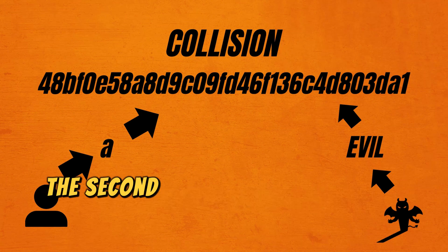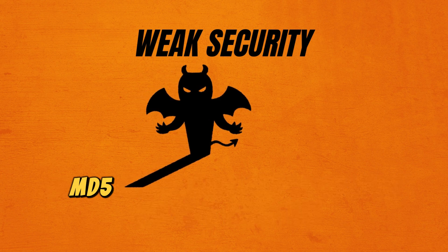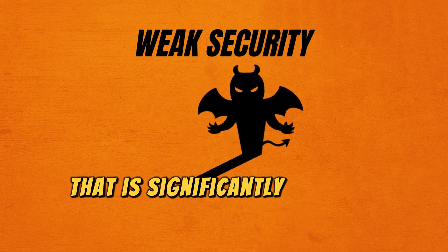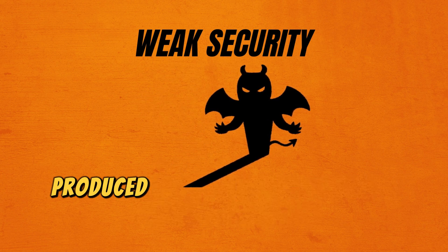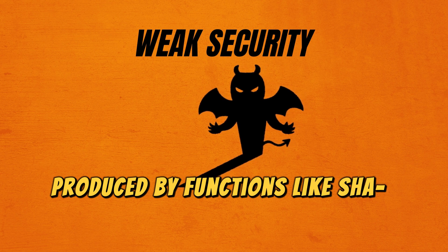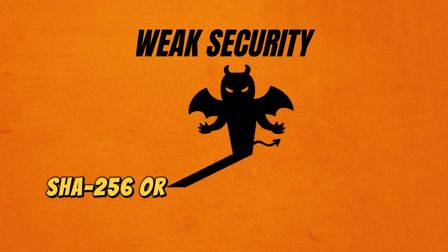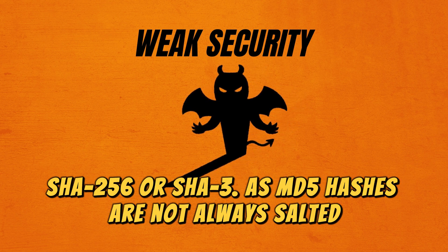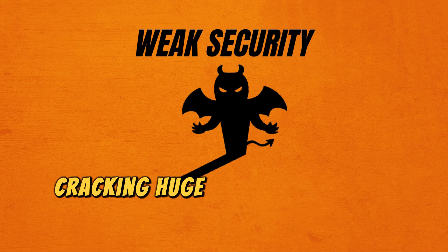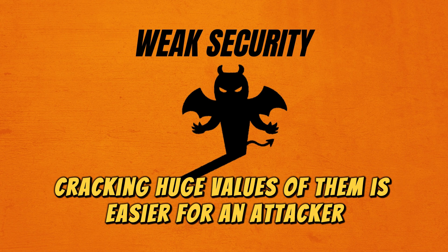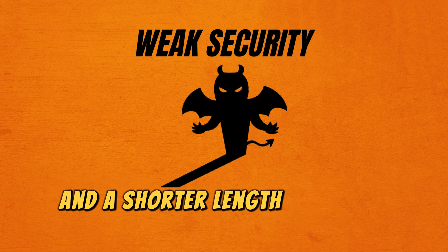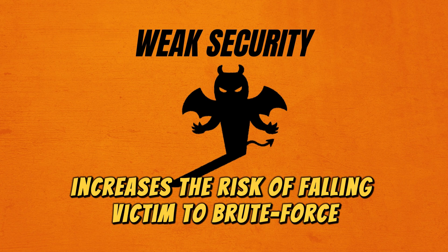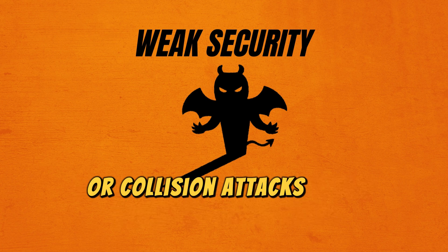The second reason is that MD5 usually produces a hash value that is significantly shorter than values produced by functions like SHA256 or SHA3. As MD5 hashes are not always salted, cracking large numbers of them is easier for an attacker, and the shorter hash length increases the risk of falling victim to brute force or collision attacks.